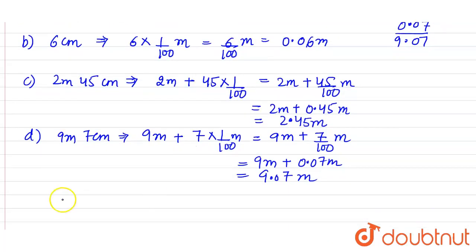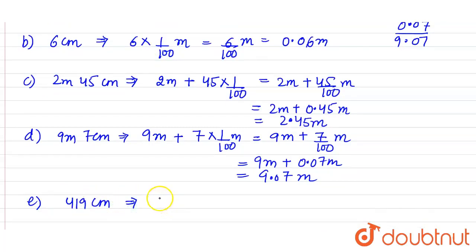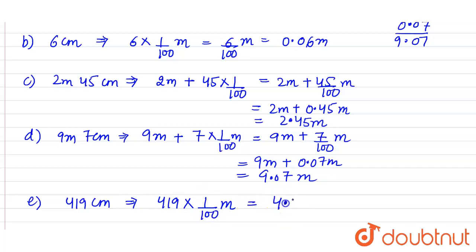Part E is 419 centimeter. Since 1 centimeter equals 1 by 100 meter, 419 centimeter equals 419 divided by 100, which gives 4.19 meter. This is the required answer.